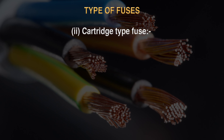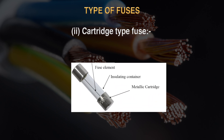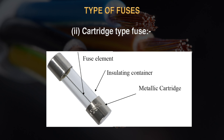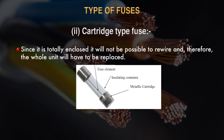The next type is the cartridge type fuse. It has a fuse element, insulating container, and metallic cartridge. It is an enclosed type fuse unit consisting of an insulating container — bulb or tube shaped — sealed at its ends with metallic caps called cartridges, and a powder material known as filler. Since it is totally enclosed, it cannot be rewired and therefore the whole unit must be replaced.